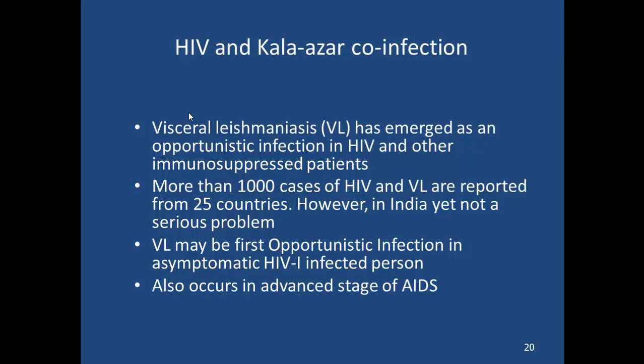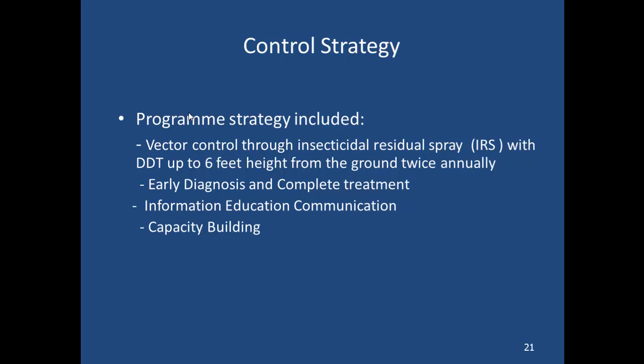It is the first opportunistic infection in asymptomatic HIV persons, but it can also occur at advanced stages of AIDS and can be one of the causes of death. Like other control programs, vector control through insecticidal spraying is important — you can use DDT for up to 6 feet of height from the ground twice annually. DDT is very controversial; historically it was used in large amounts, but it was withdrawn in the 1960s due to environmental concerns, and now recommendations are for residential spraying in very small amounts. Other controls include early diagnosis and treatment completion, and capacity building for better surveillance and education.